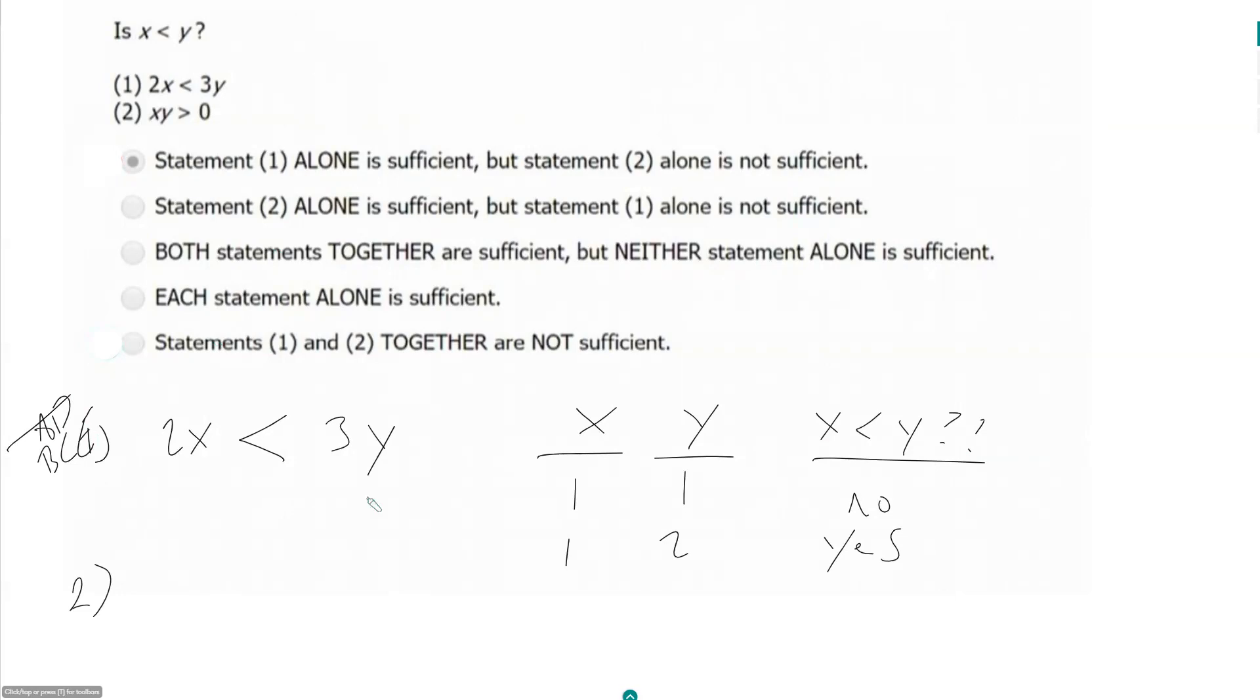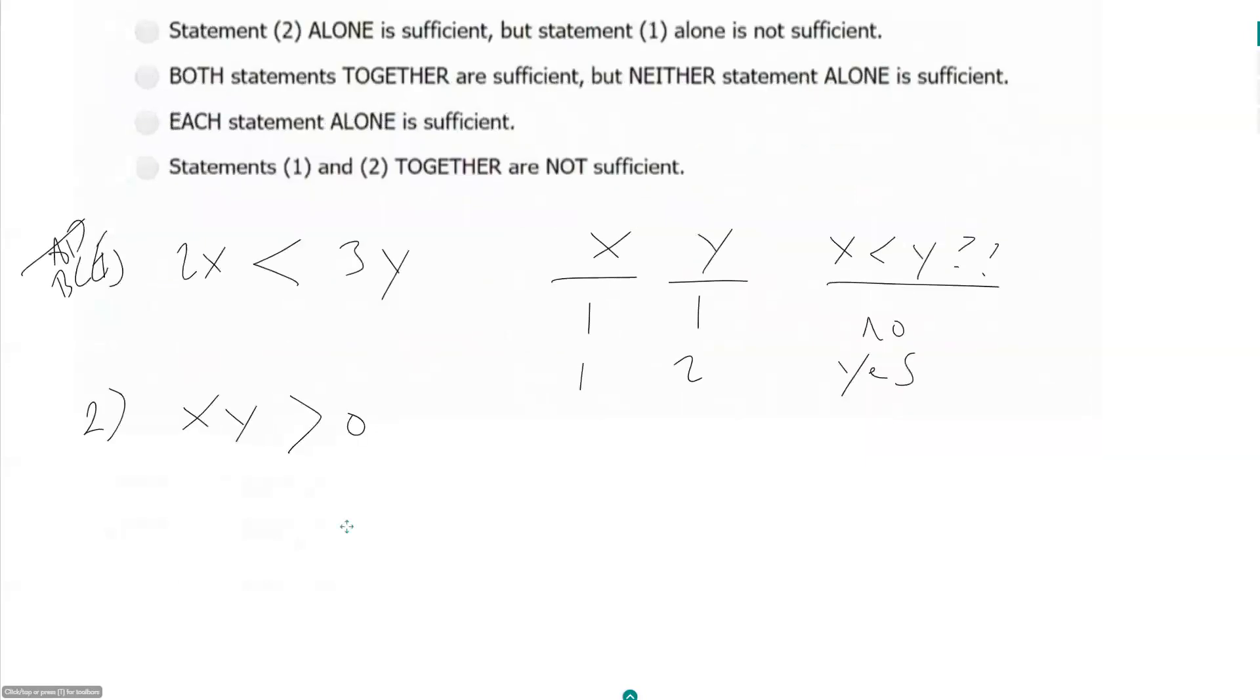Statement two says xy is greater than 0. So that means if x and y are two numbers multiplied together to be greater than 0, they got to have the same sign. So either have a positive times a positive or a negative times a negative.